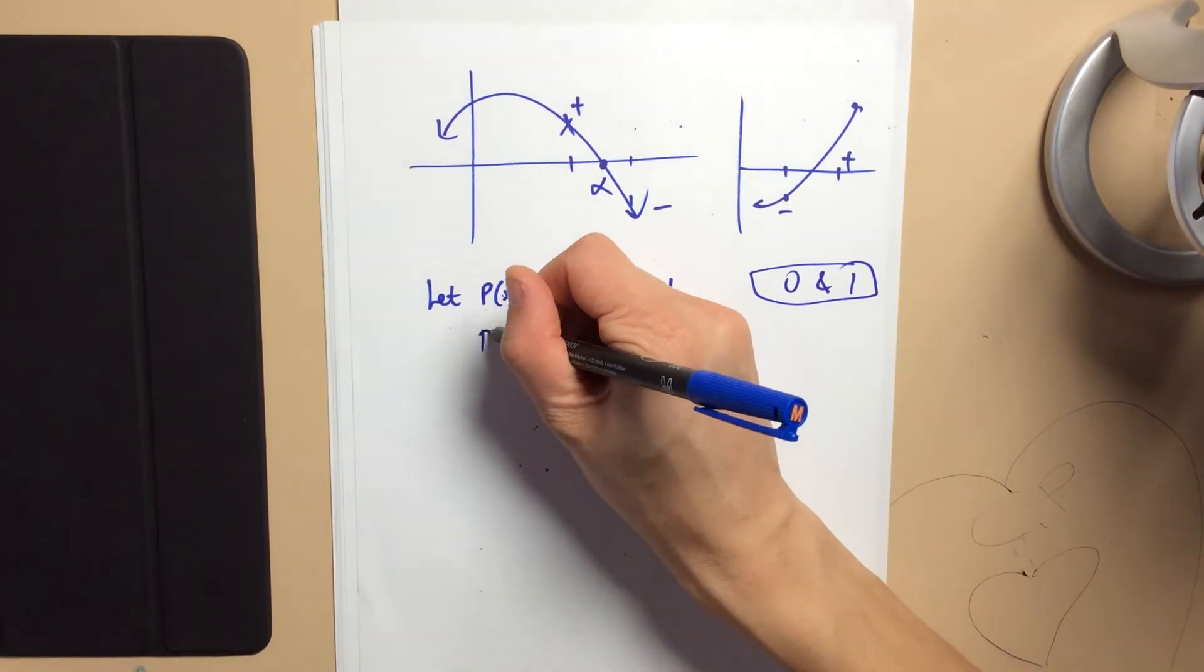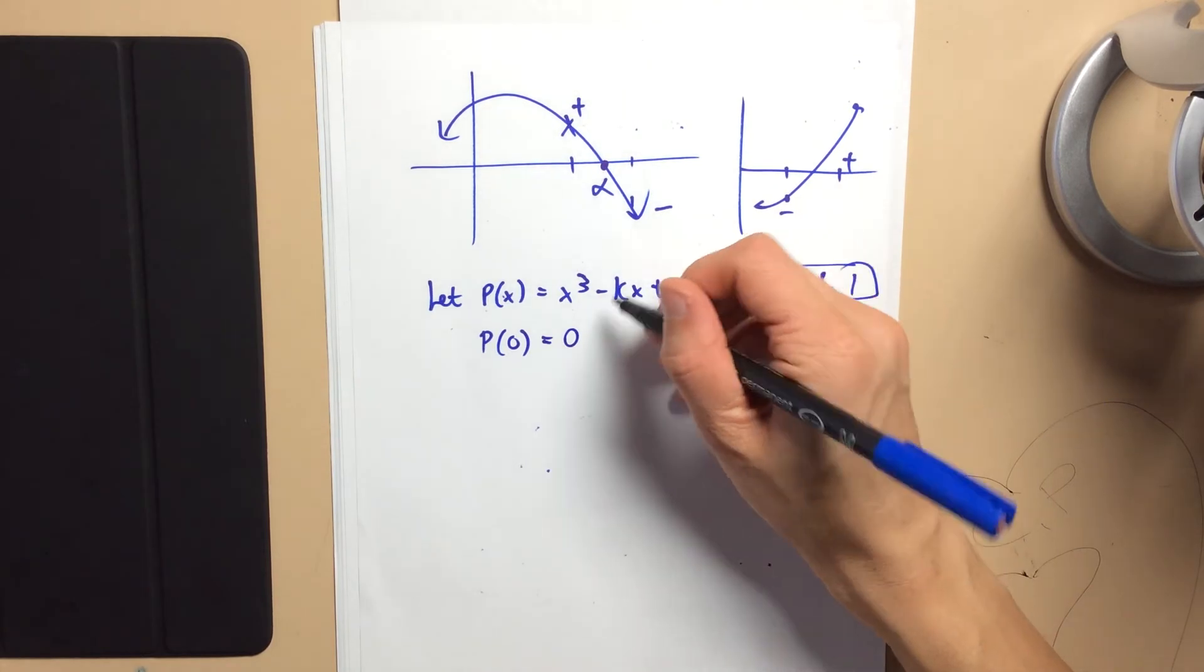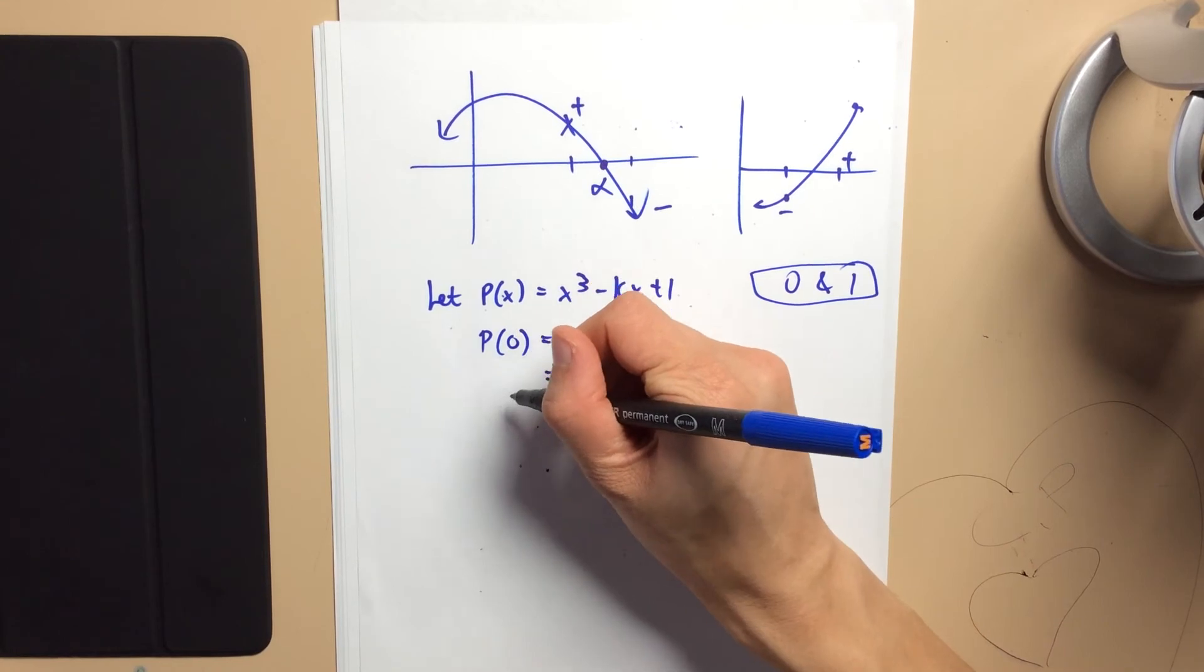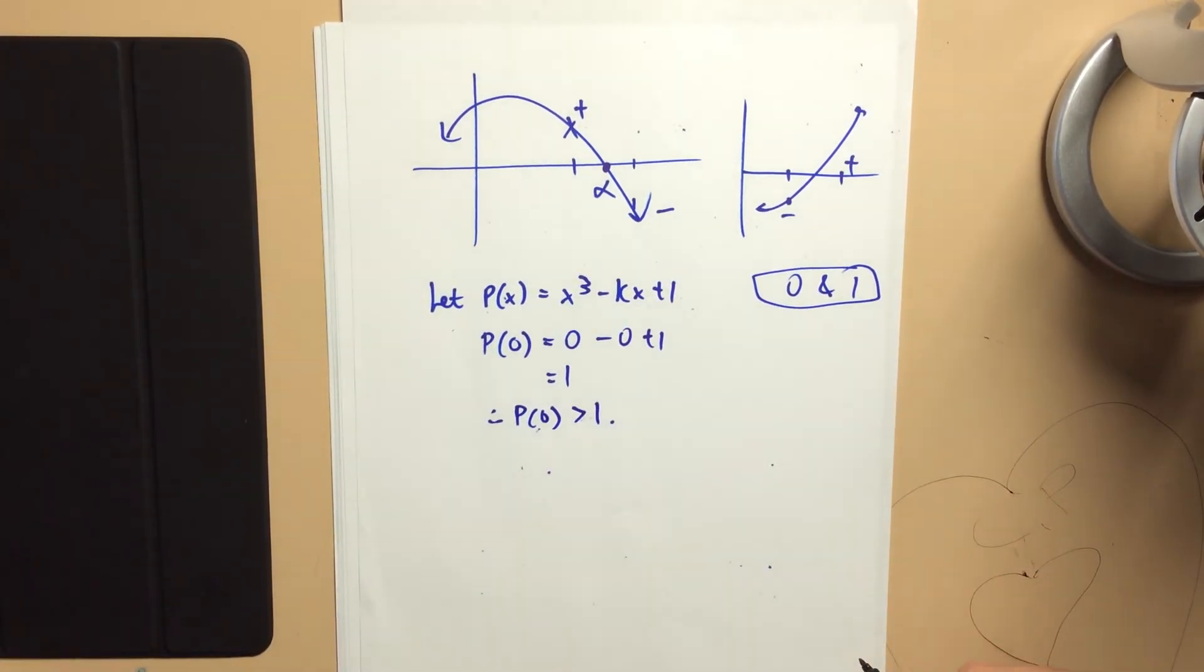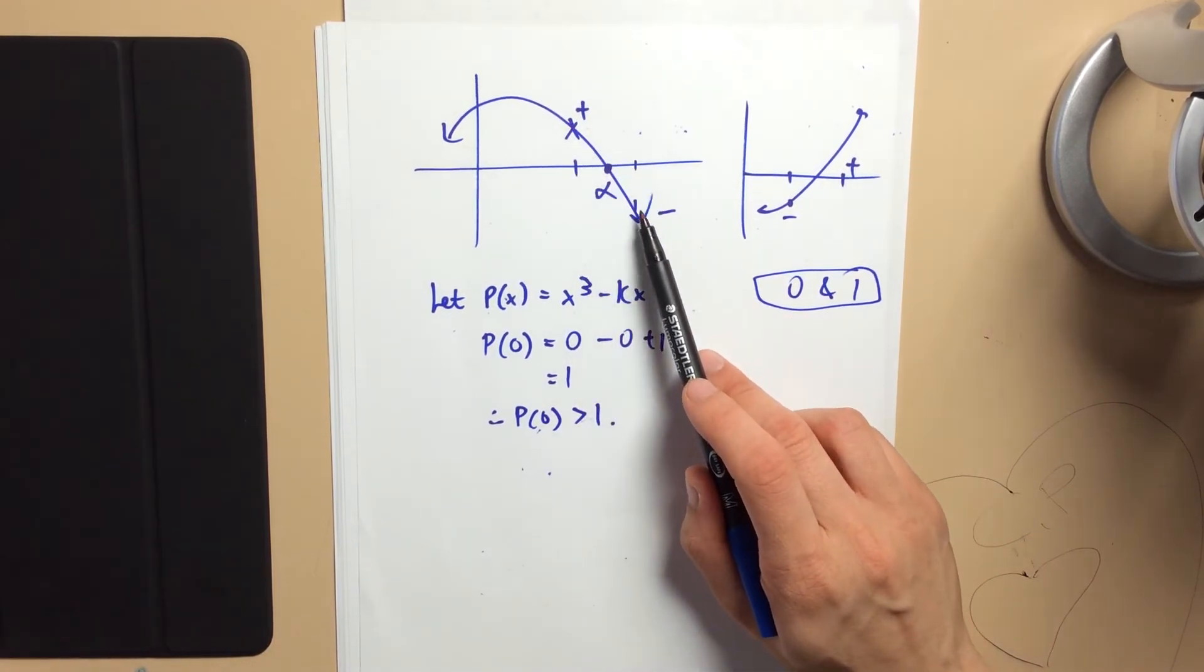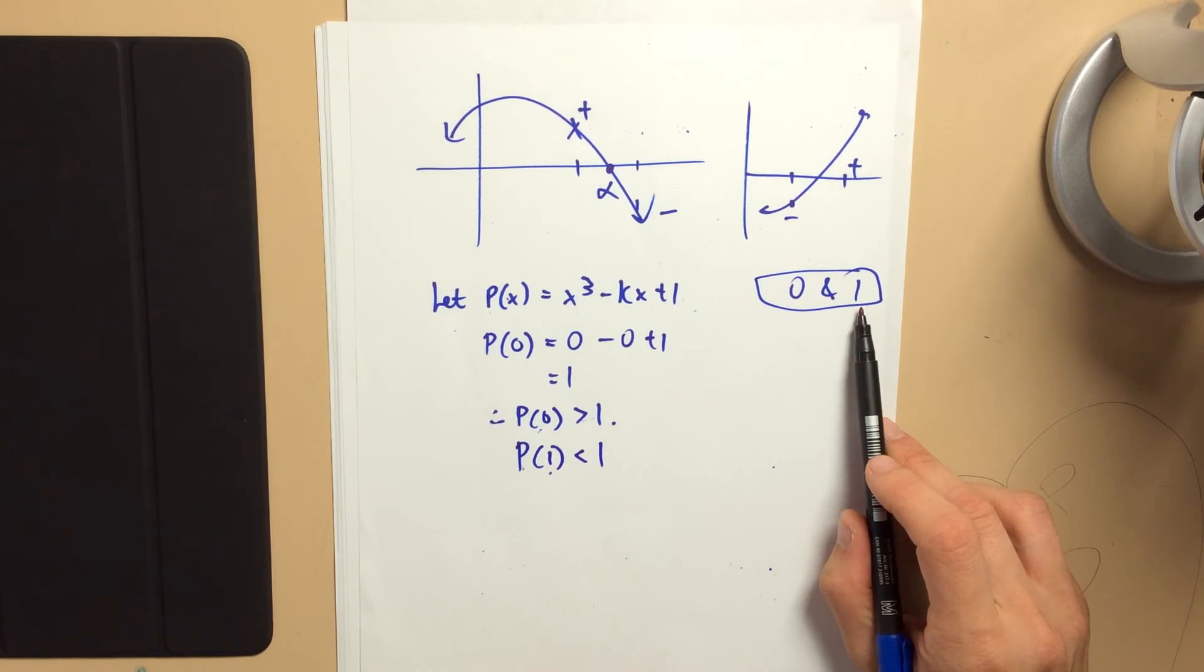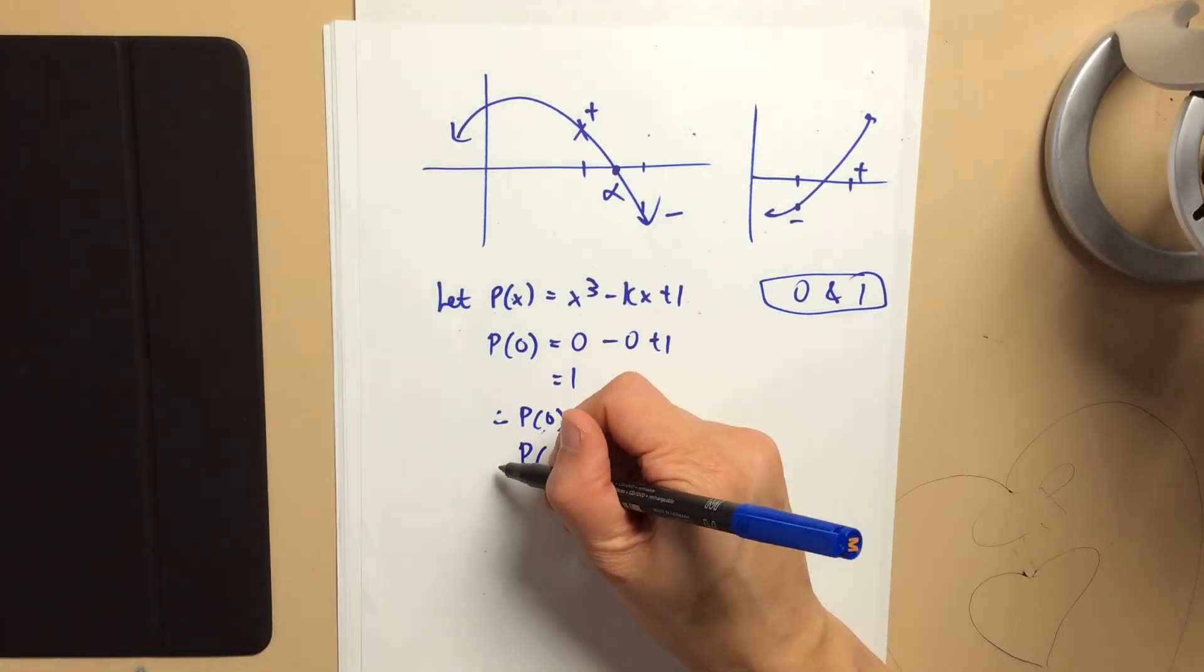So let's see what happens at 0. Well, I'm going to get 0 cubed, which is 0, minus k lots of 0, which is 0, plus 1. So it's equal to 1. Now, what that tells me is that p of 0 is positive, right? So before the root that I'm expecting, I'm above the axis. So that means after the root, I should be expecting it to be below the axis. I should be expecting this, right? Because I know between here and here, it passes through the x-axis.